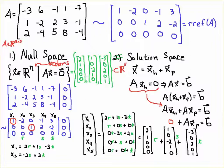The null space is a subspace of R^5 in this case. To find the null space of a matrix: reduce to RREF, set the right-hand side equal to zero, and determine the solution. If the solution is only the zero vector, you have a unique solution to Ax = B. Because of the free parameters here from the homogeneous solution Ax = 0, we have an infinite number of solutions. Good luck!